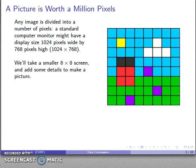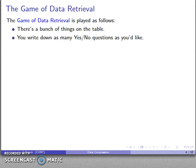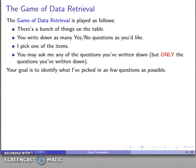The important question is how do we want to store this picture. We'll do that by playing what we call the game of data retrieval. There's going to be a bunch of things out on the table and you can write down as many yes or no questions as you'd like. I'm going to pick one of the items and you can ask me any of the questions you've written down, but you're limited to just those questions. Your goal is to identify what I've picked using as few questions as possible.